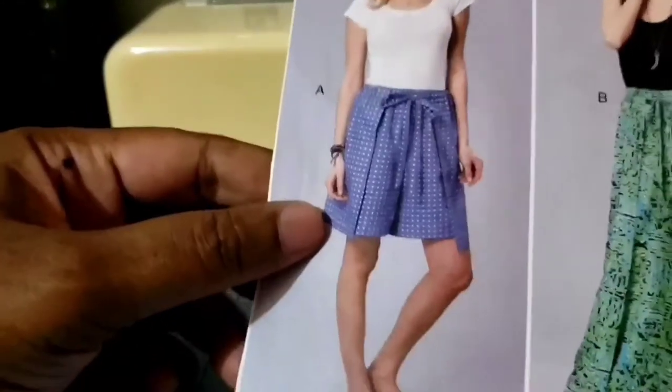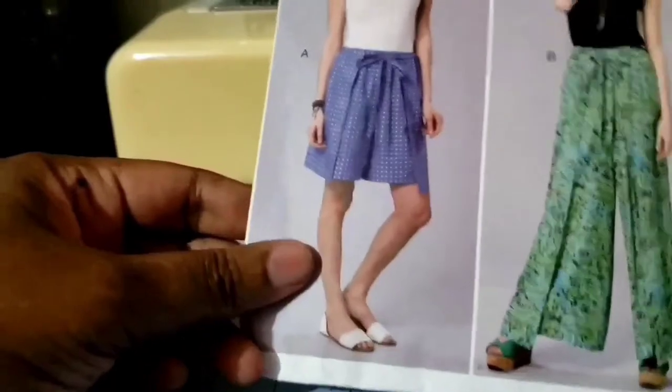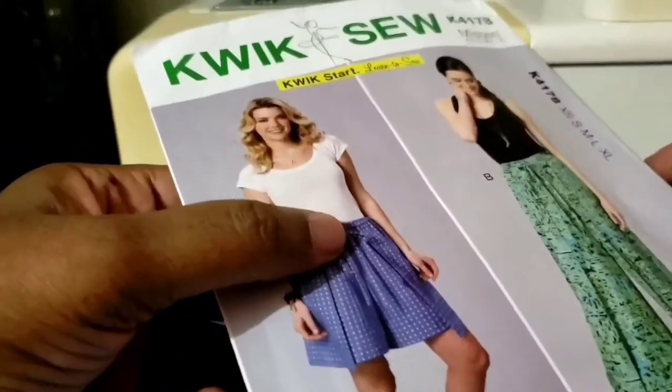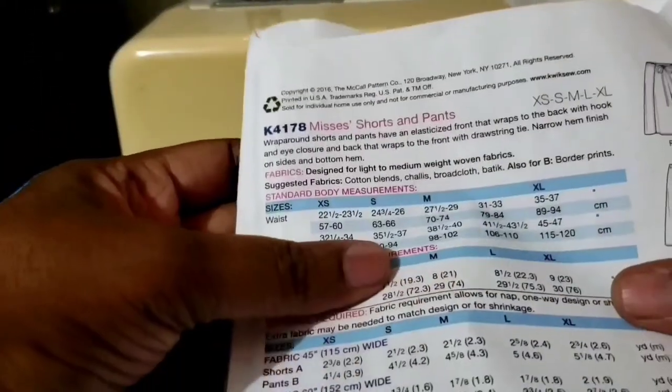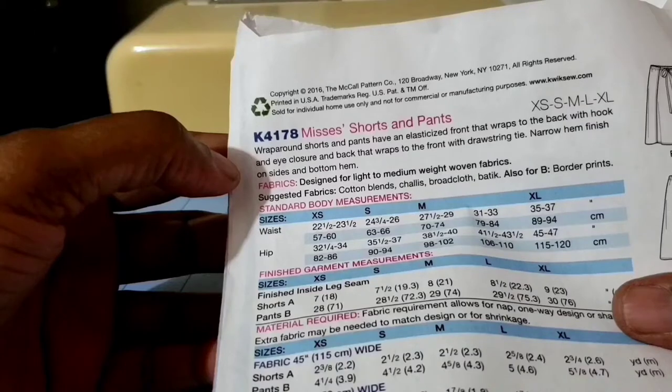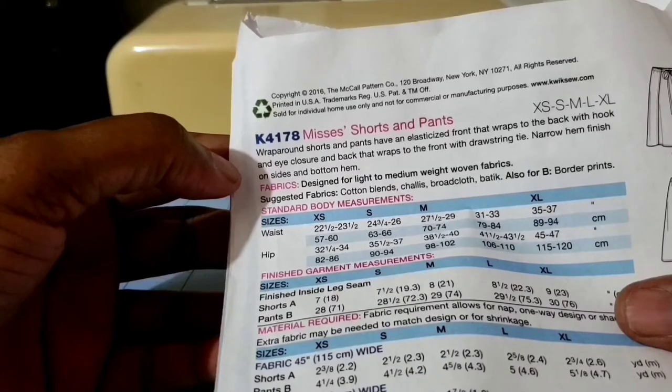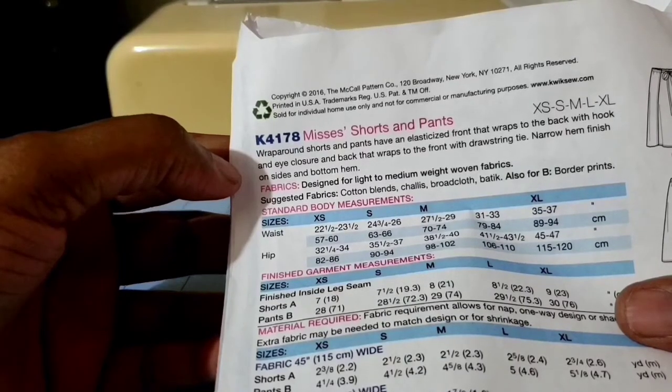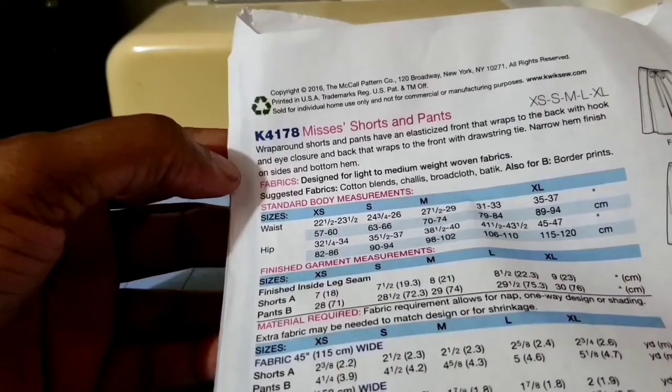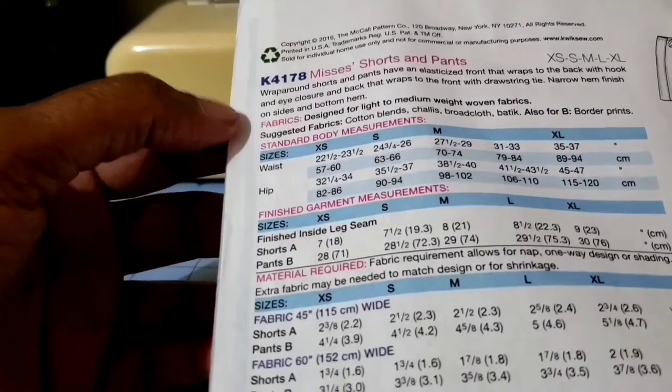It's a very simple one as you can see - wraparound shorts stopping a little bit above the knee. That is view A. Let me show you the back description. It says wraparound shorts and pants have an elasticized front that wraps to the back with a hook and eye closure and a back that wraps to the front with a drawstring tie. Then there is a narrow hem finish on the sides and the bottom hem.